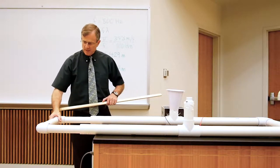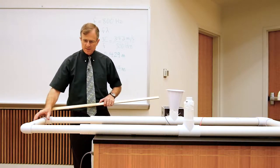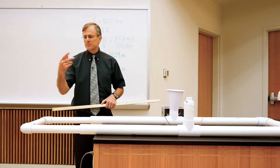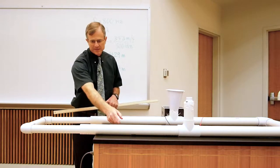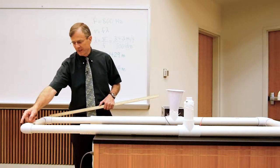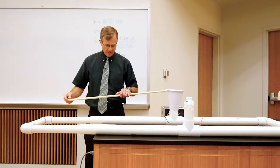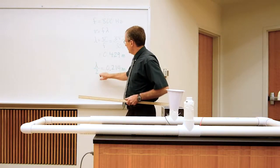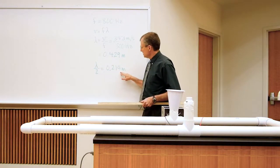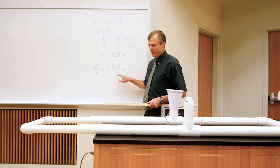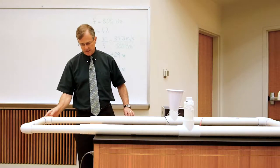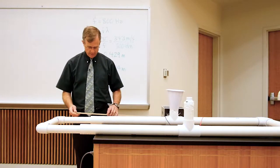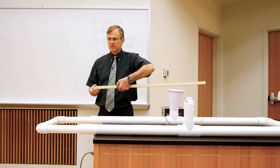But as I move this a certain distance, the path length increases by twice that distance, because the sound has to go an extra distance along here and an extra distance along here. So half of this wavelength is 21.4 centimeters. So the theory predicts that if I move this arm 21.4 centimeters, about this distance here,